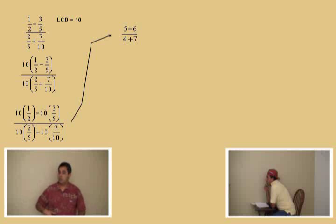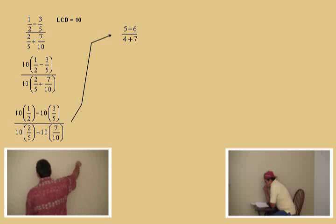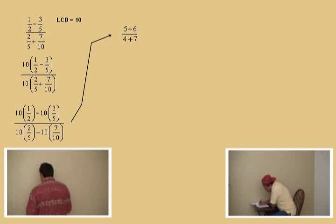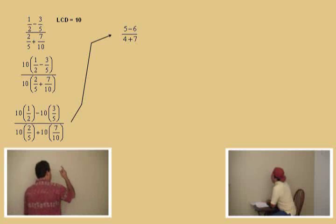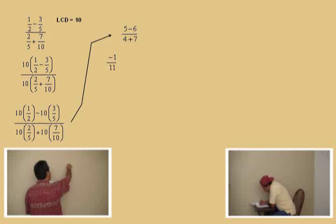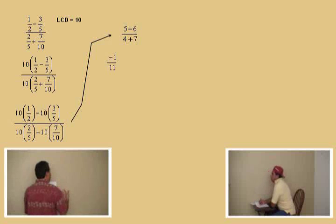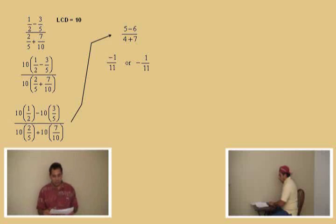Now, remember, we're going through this rather quickly because this was all covered in pre-algebra. So go back and refresh your memory. Now, basic arithmetic here now. Charlie, what's 5 subtract 6? Negative one. Negative one. And 4 plus 7 is 11. So our answer is negative one over 11, or we can write this as negative 1/11. Either answer is acceptable. And we'll go ahead and box our answer.